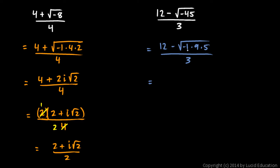Okay, now let's take the negative 1 out from under the radical. It will become an i, and the 9 out from under the radical will be a 3. So we have 12 minus 3i root 5. The square root of 5 stays there, all over 3.